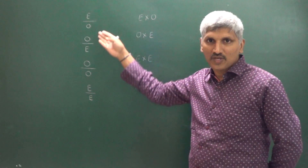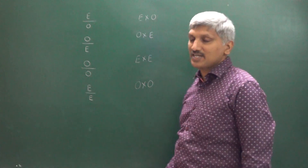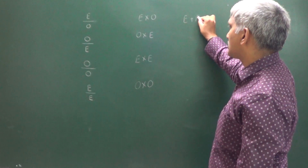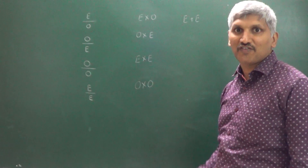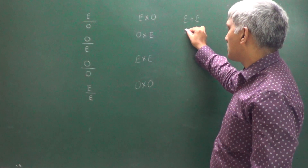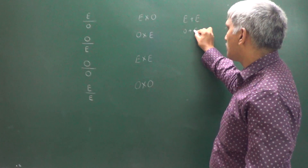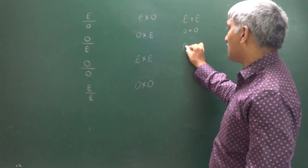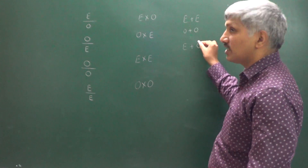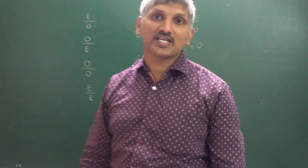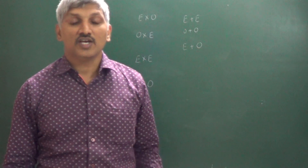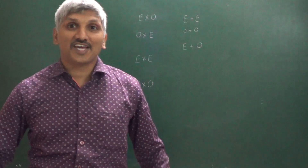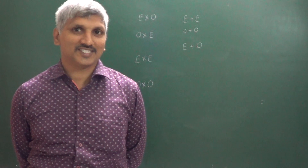At the same time, even function plus even function gives an even function. Odd function plus odd function gives an odd function. Whereas even function plus odd function, or even function minus odd function — we cannot say whether it is even or odd; it is neither even nor odd.